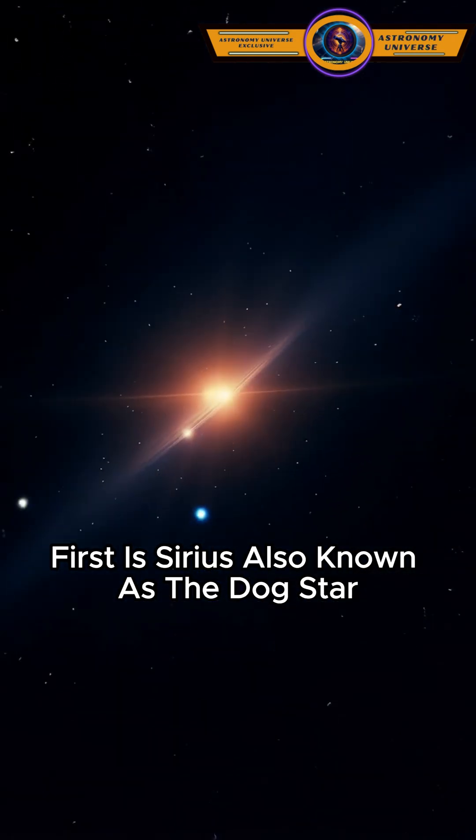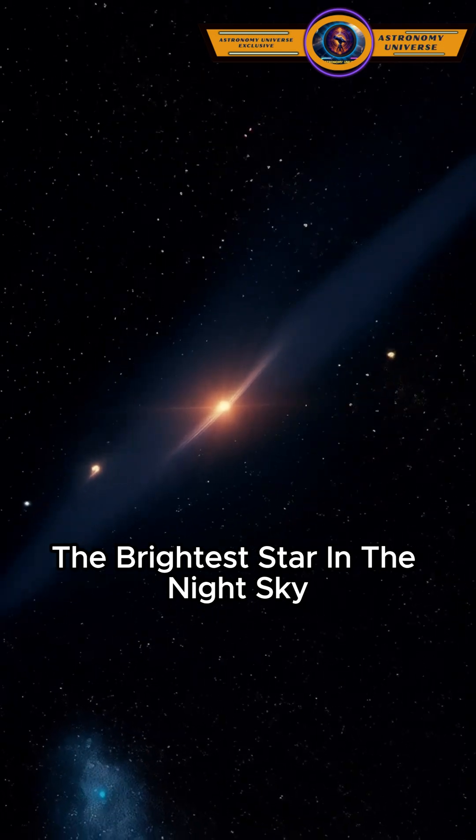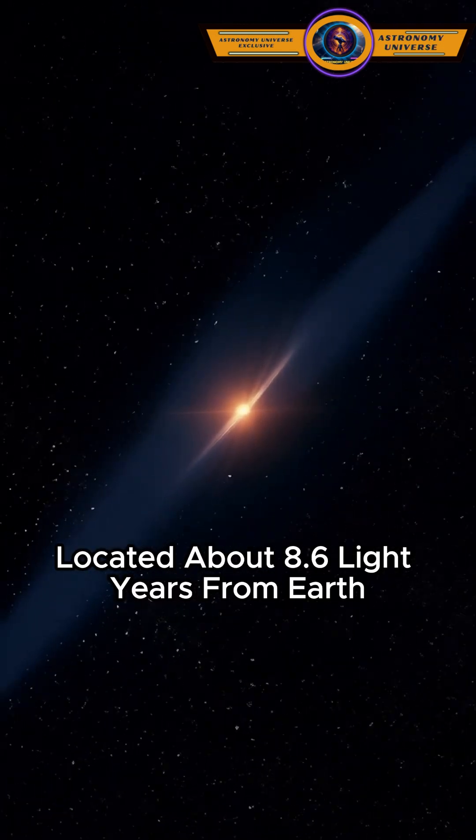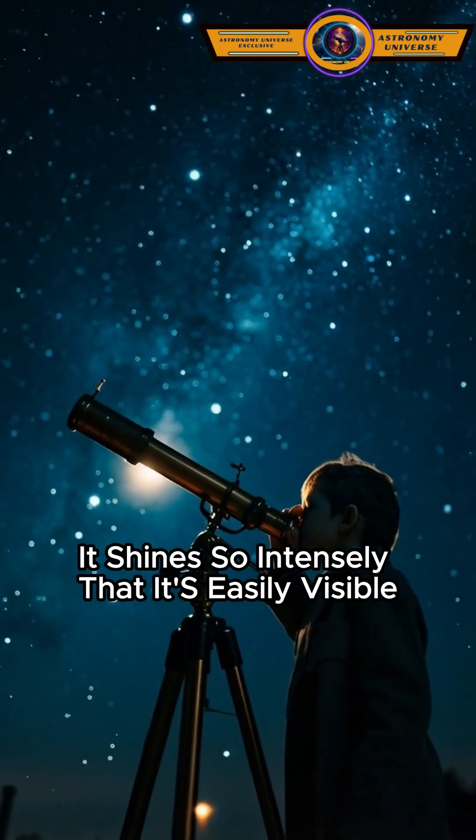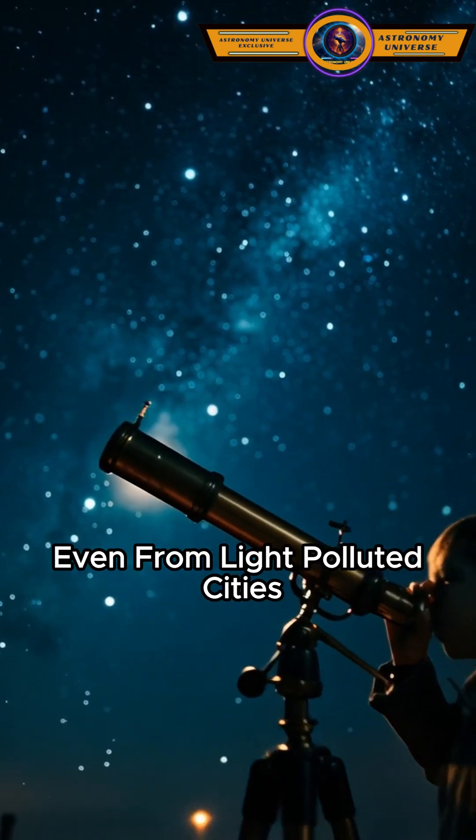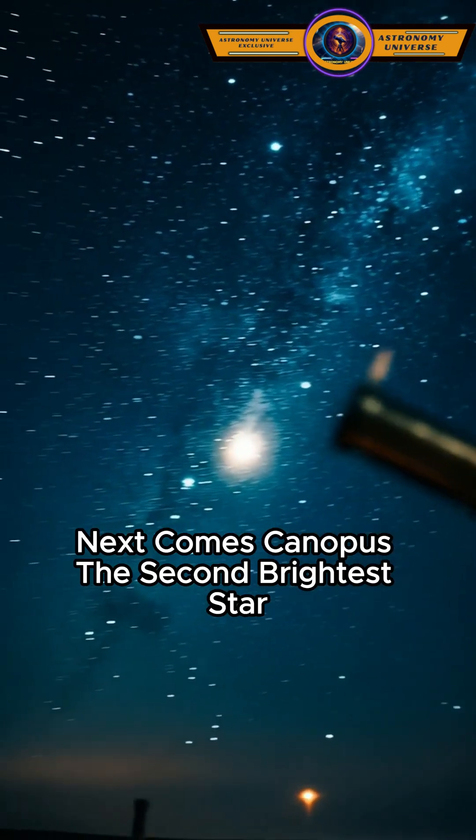First is Sirius, also known as the Dog Star, the brightest star in the night sky, located about 8.6 light-years from Earth. It shines so intensely that it's easily visible even from light-polluted cities.